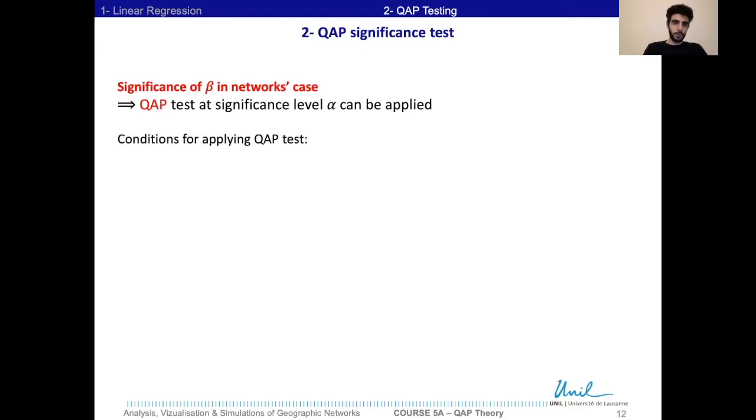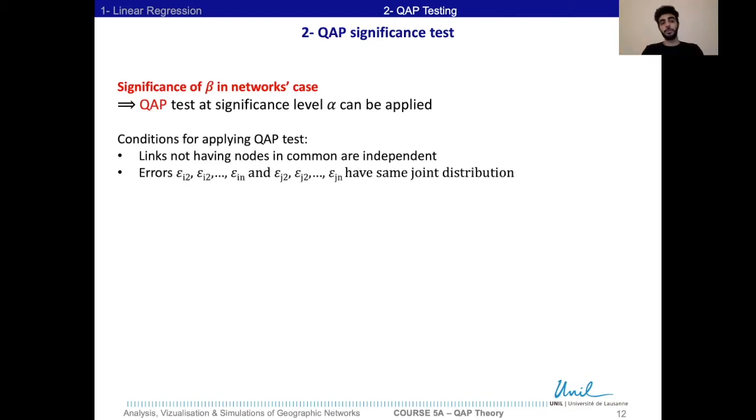So what are the conditions to apply the QAP test? Here we need to have the links that are not connected to the same node to be independent. And then if we look at two different nodes and look at all the links that are incident to the first node and all the links that are incident to the second node, then the group of errors associated to the first group and the group of errors associated to the second group should have the same joint distribution.